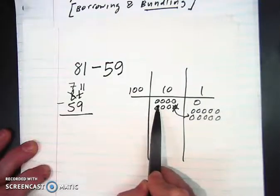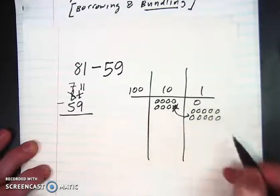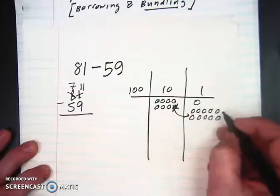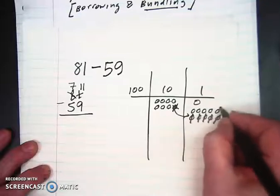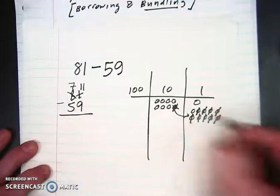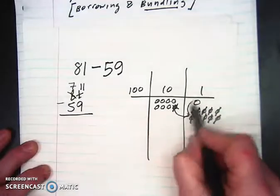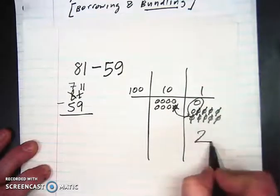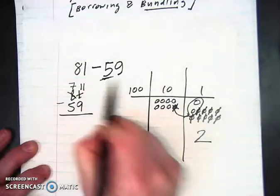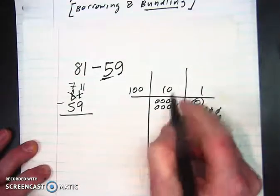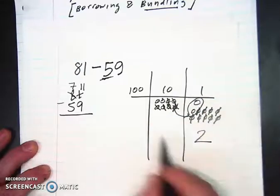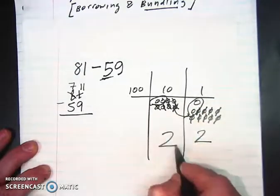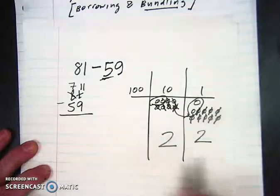So we're going to start subtracting 59. This is what it looks like. So first I'm going to take away the 9. 1, 2, 3, 4, 5, 6, 7, 8, 9. And how many do I have left? I have 2. And now I'm going to subtract the 50, so the 5. 1, 2, 3, 4, 5. That's it. And I've got 2 left here as well. So that leaves us with 22.